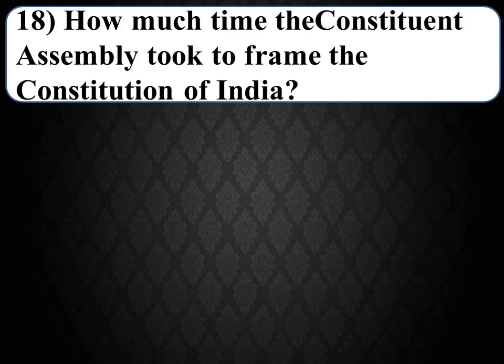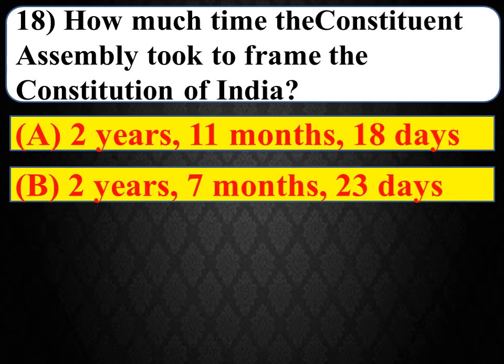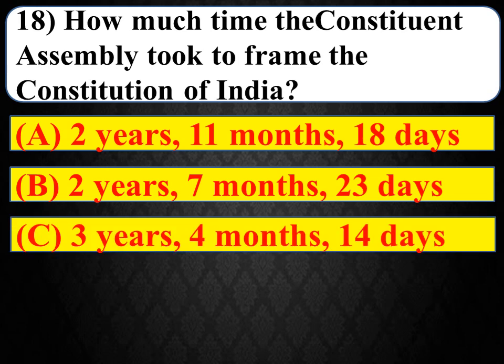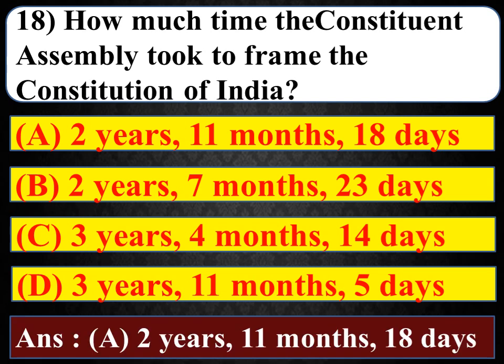Next question: how much time did the Constituent Assembly take to frame the Constitution of India? Options: 2 years 11 months 18 days, 2 years 7 months 23 days, 3 years 4 months 14 days, 3 years 11 months 5 days. The right answer is A — 2 years, 11 months, 18 days was taken by the Constituent Assembly to frame the Constitution of India.